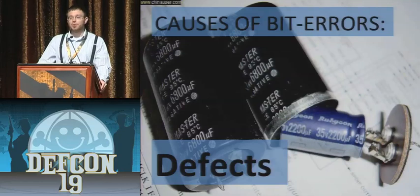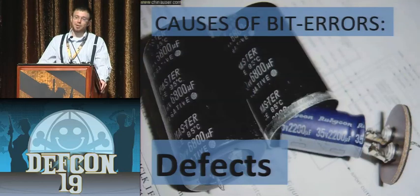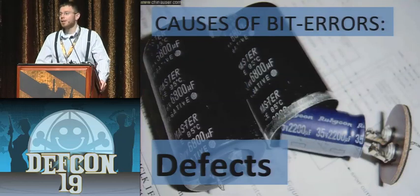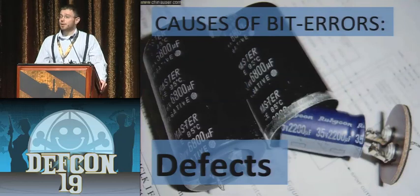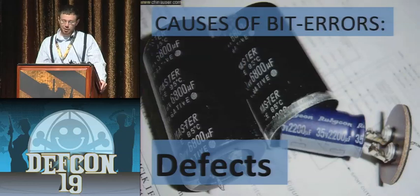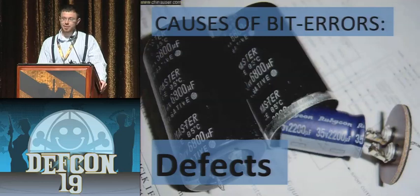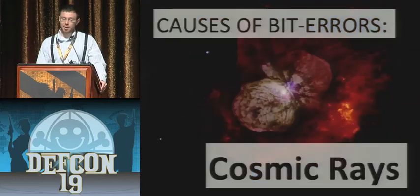Capacitors also aren't the only electronic components that are pirated — there are knockoffs of all kinds of things sold on the black market. Even if they do use the very best components, as we saw in the case of the Intel DRAMs and the Sun UltraSparc, sometimes there may just be radioactive contamination somewhere during manufacturing. And speaking of radiation, that brings us to the last but certainly not least cause of bit errors: cosmic rays.